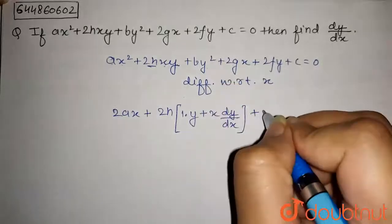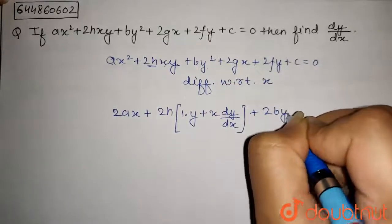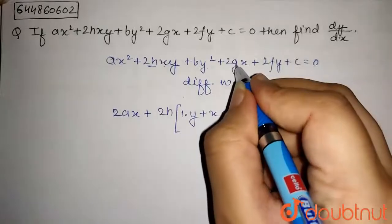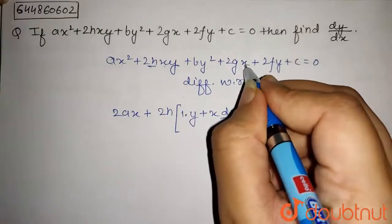Plus differentiation of by². So, differentiation of by² will be 2by into dy by dx plus 2g is constant and differentiation of x will be 1. So this will be 2g